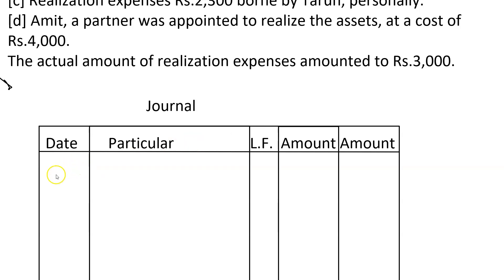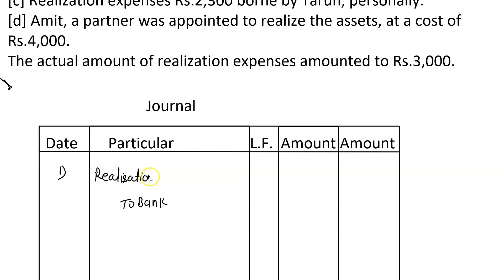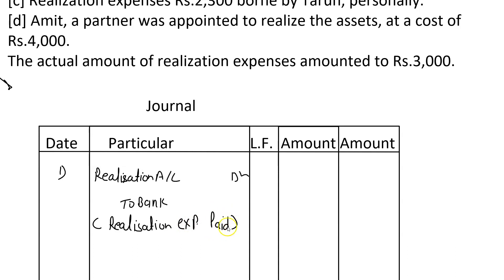Since there is no date given, we will number them 1, 2, 3. When you pay an expense, you credit the bank account. So the entry is: Realization Account debit, To Bank. The narration will be 'realization expense paid'. The amount given is Rs. 2500.